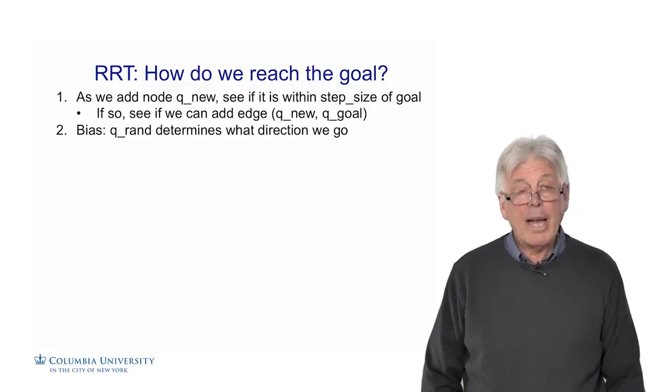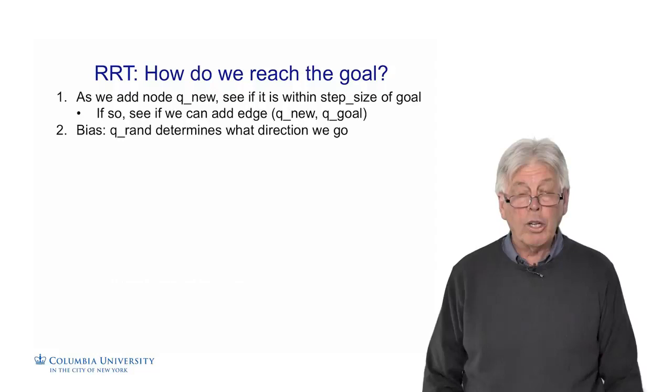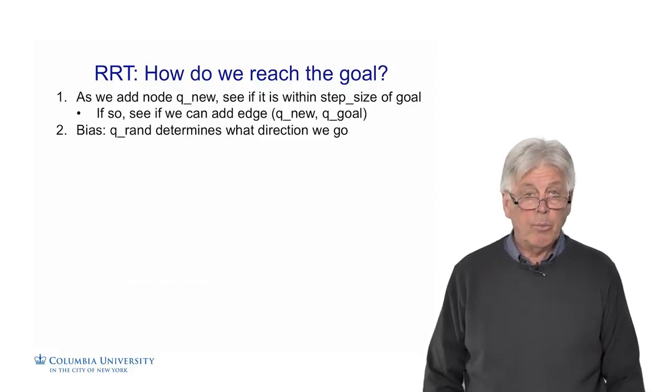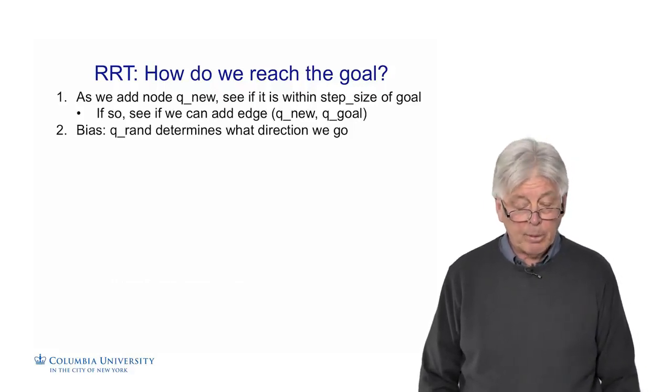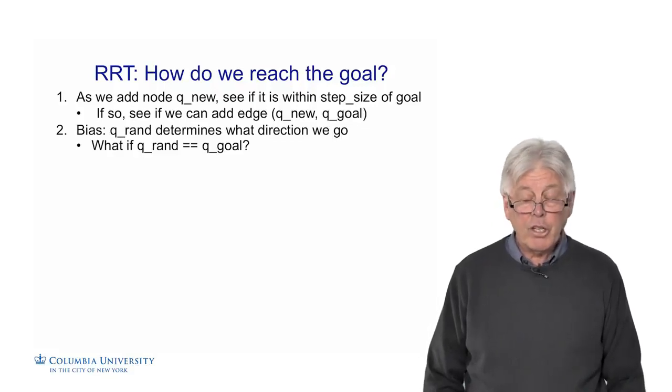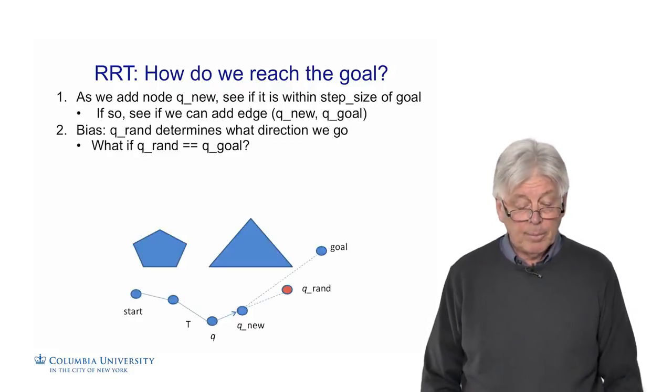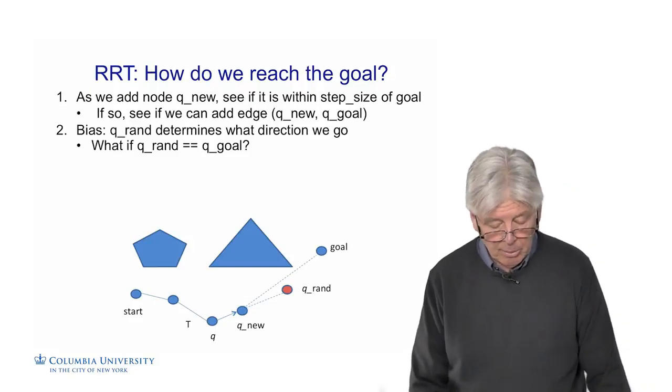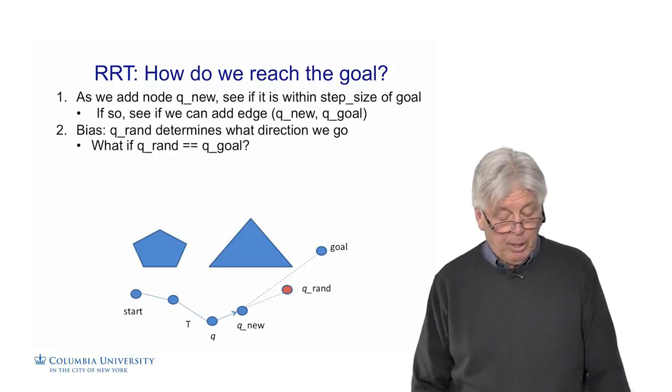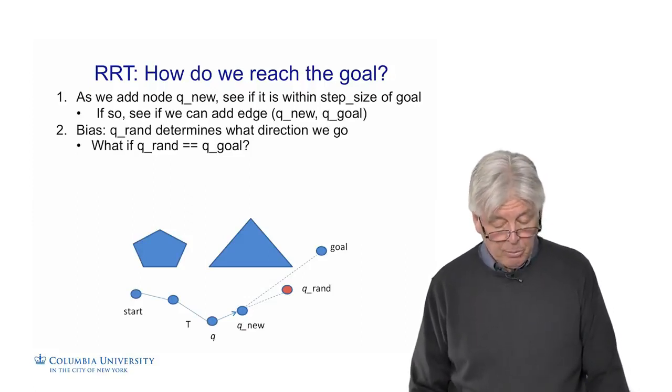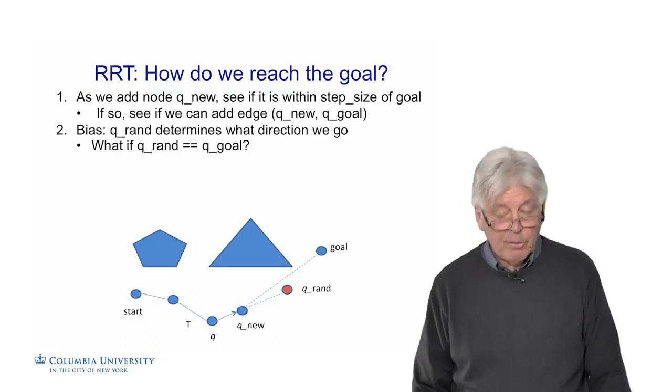Another way to do it is to use a bias. QRAN determines what direction we go. We randomly do a configuration, find the nearest neighbor on the tree and move in that direction from that nearest neighbor. But what if the random configuration we choose is the goal? You can see here, normally we have the red QRAN, which moves us out to this node Q, which is the closest node, and then we go out to step size to create QNew. But we could have chosen the goal as QRAN, which would say, let's move towards the goal directly.